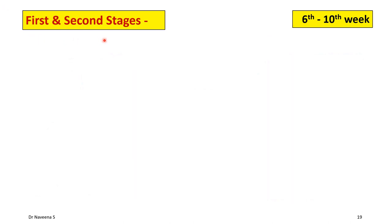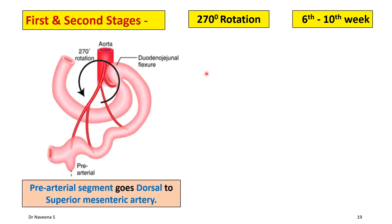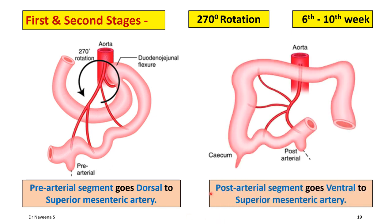In the first and second stages, during the 6th to 10th week, the midgut loop undergoes 270 degrees of rotation towards the right side, which is anti-clockwise rotation. This results in the pre-arterial segment going dorsal to the superior mesenteric artery and the post-arterial segment going ventral to it. These positions define the definitive positions of their derivatives: the lower part of the duodenum lies dorsal to the superior mesenteric artery, whereas the transverse colon lies ventral to it.